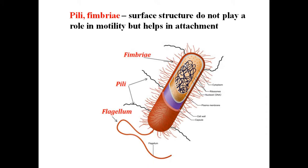On the outer surface, prokaryotes have three different structures: flagellum, pili, and fimbriae. The flagellum plays a main role in motility, while pili and fimbriae are surface structures that do not play a role in motility but help in attachment.